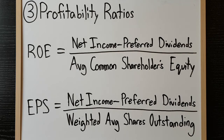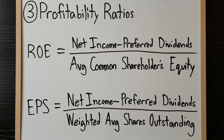Earnings per share is another common metric, which is also required to be disclosed on the income statement under IFRS. EPS can be calculated as net income, less preferred dividends, over weighted average shares outstanding.